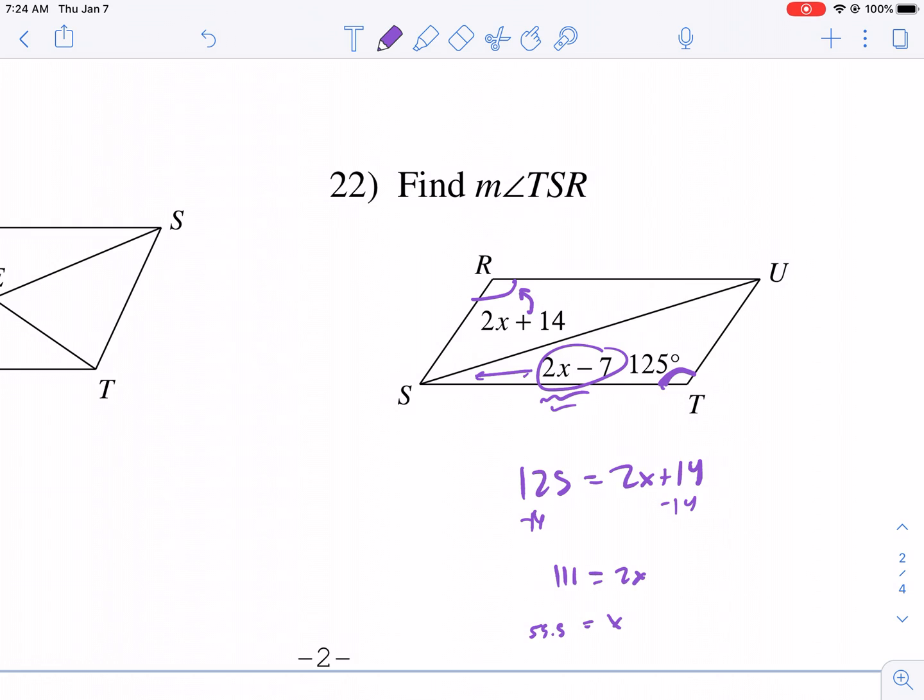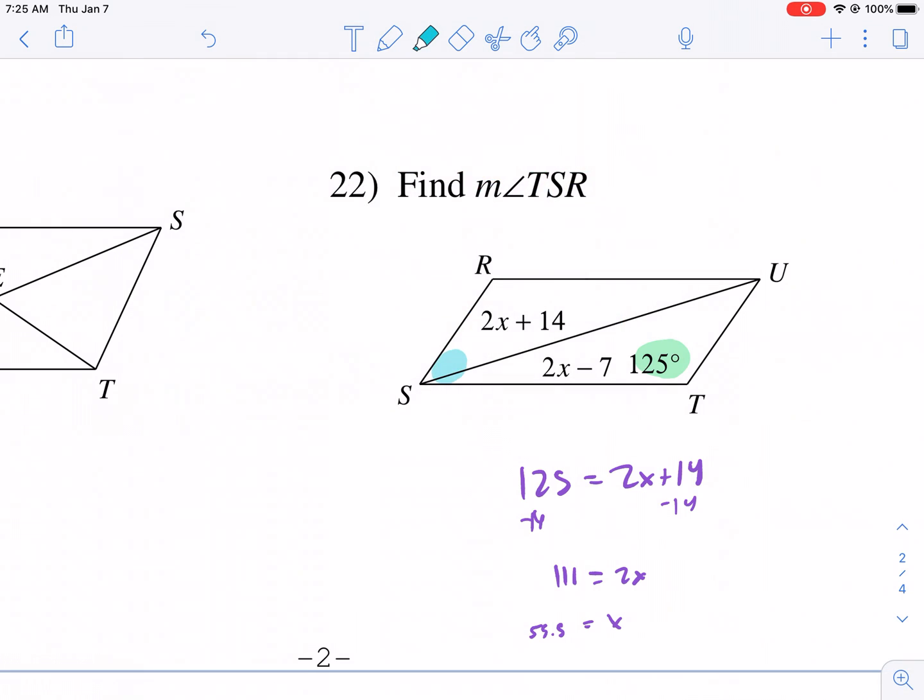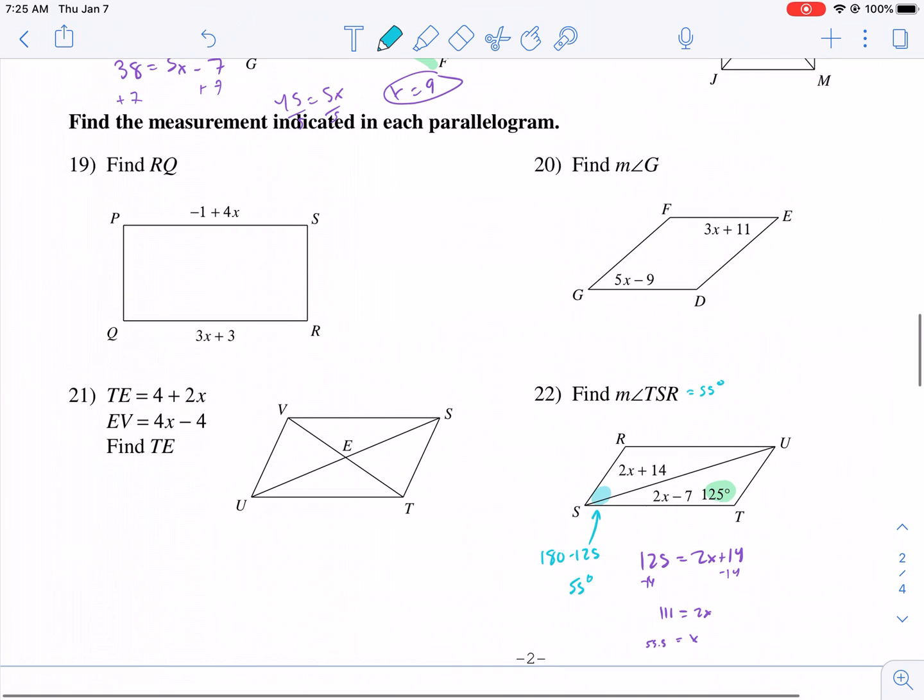Angle TSR. Actually, what am I doing? This is way easier than that. You don't need, I mean, if that's what it's asking us to find, really all you need to do is say, if this is 125, we know that TSR, this blue angle, is supplementary to that. So we can just say that angle TSR is going to be 180 minus 125, and that's just 55. So TSR is equal to 55 degrees. I'm not sure what else it's asking you to find. It's kind of a weird problem there, I'm going to be honest. I think someone messed it up. But, yeah, that's the process here.